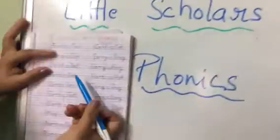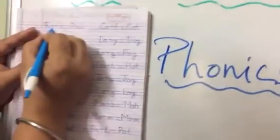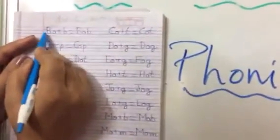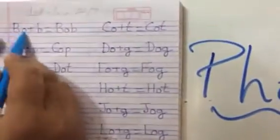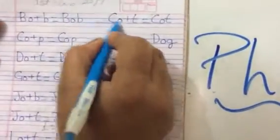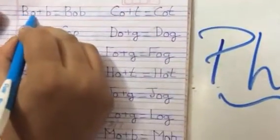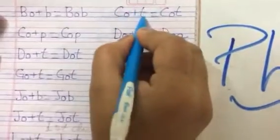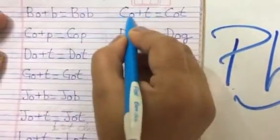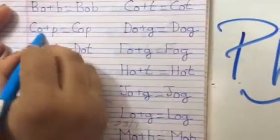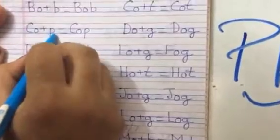So what will we do today? We will start with O-letter words. B-O — BO. B-O-B plus B — BOB. C-O plus T — COT. C-O-P plus B — COP.